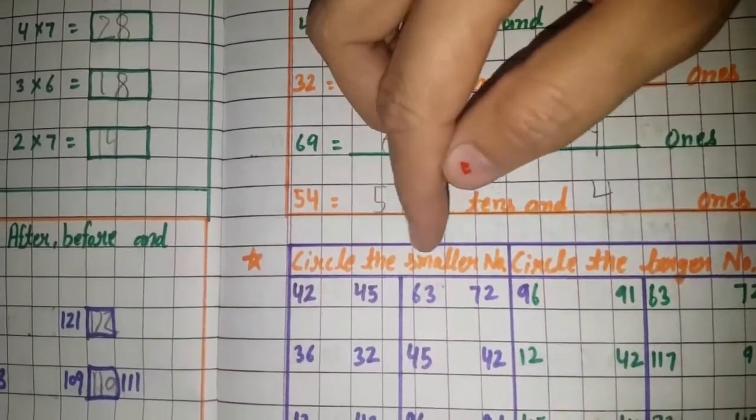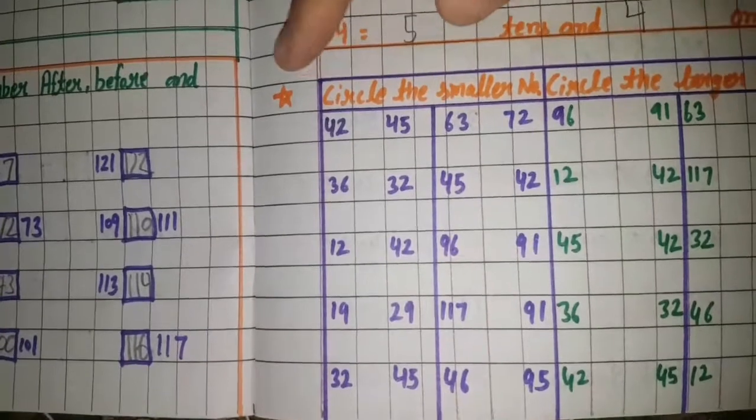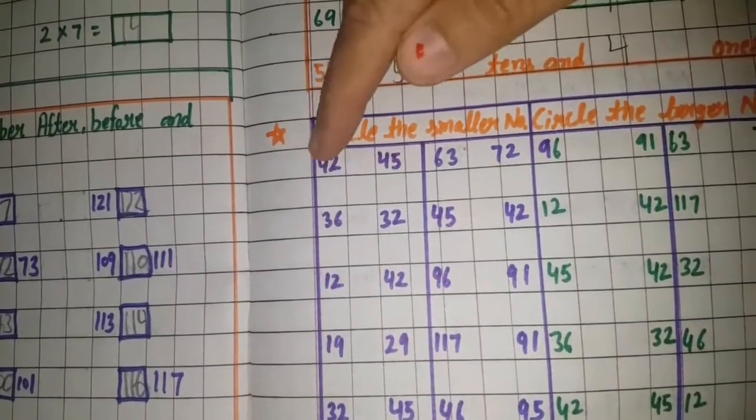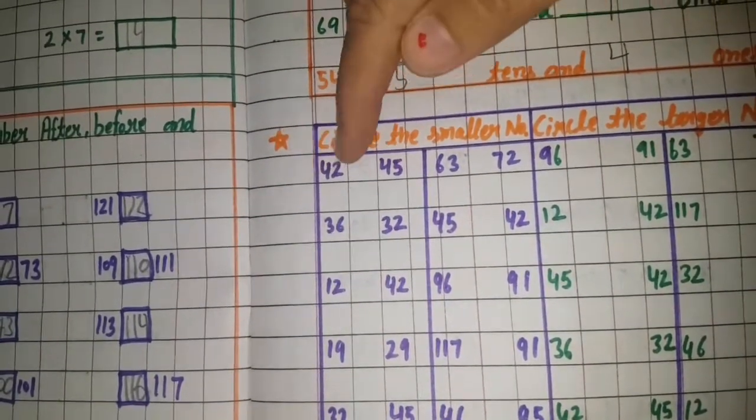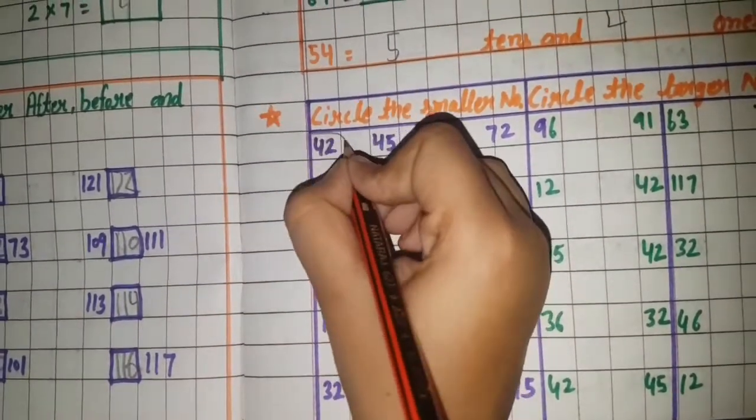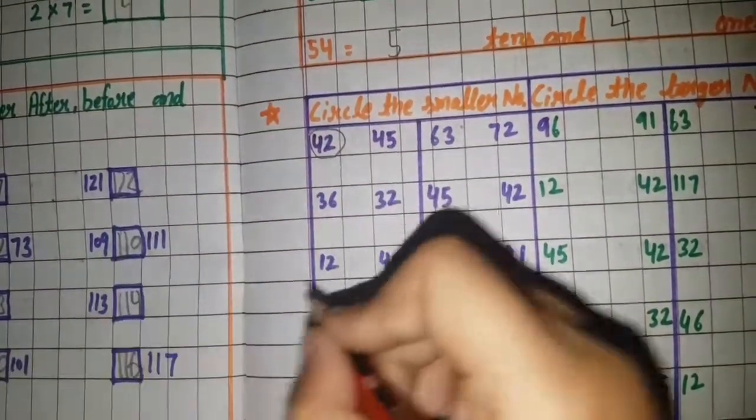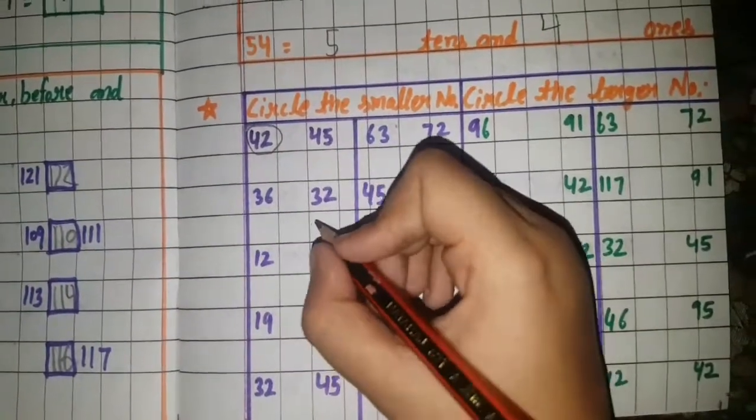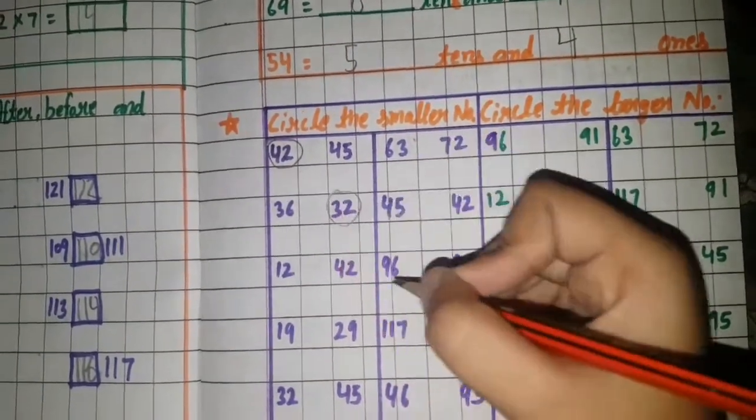Circle the smallest number. In these two, which is smallest? Circle it. Next. This one is small.